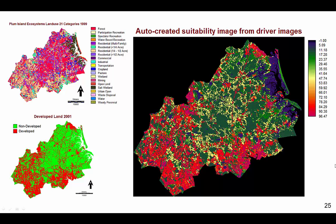GEOMOD produces a suitability map which dictates the sequence in which GEOMOD selects pixels for simulated change. GEOMOD created our suitability image by comparing the 21 categories of the driver image to the map of developed land at the beginning time, which is 2001. GEOMOD computes an empirical probability for each category in the driver image, then uses the empirical probabilities to reclass the driver image to produce the suitability image.